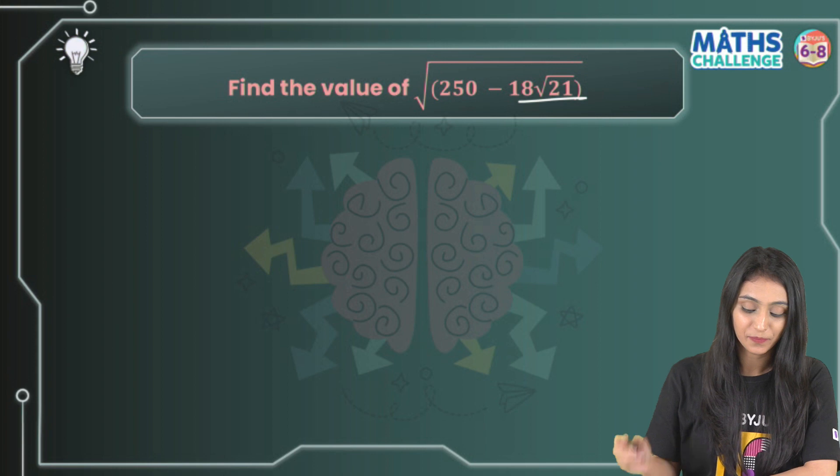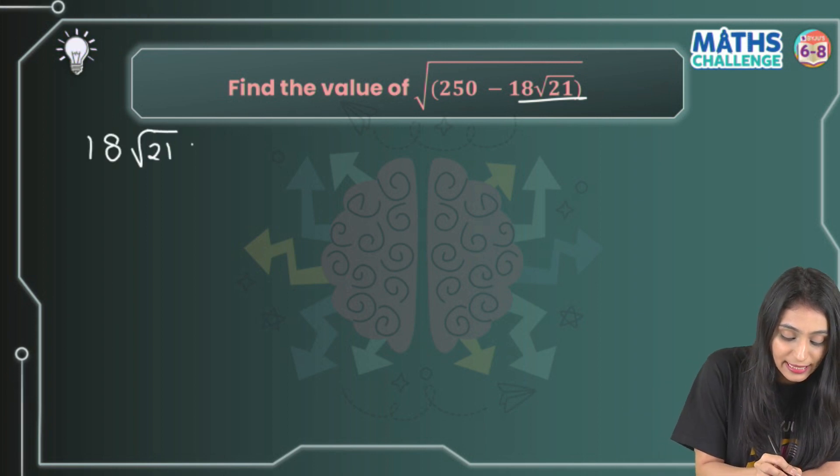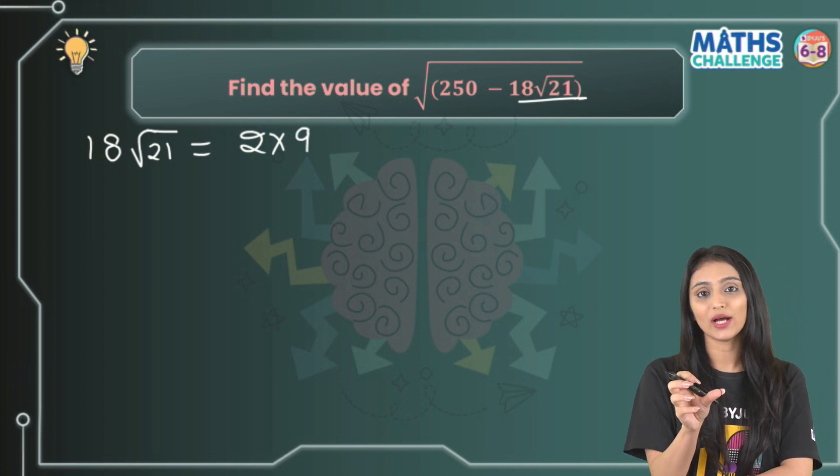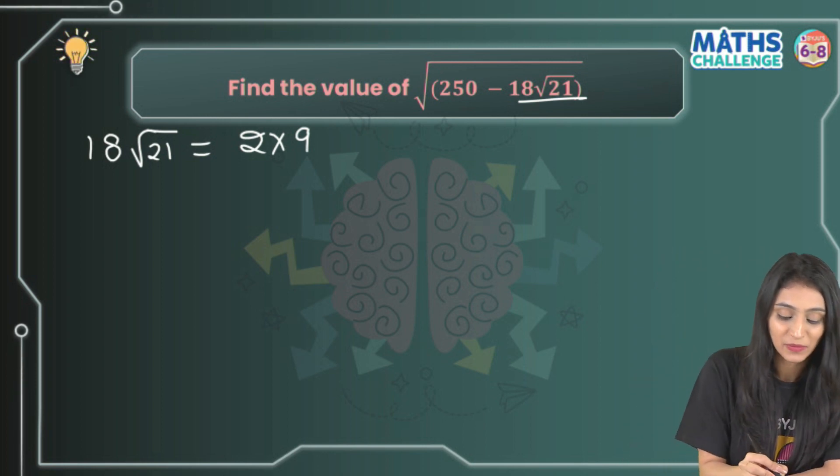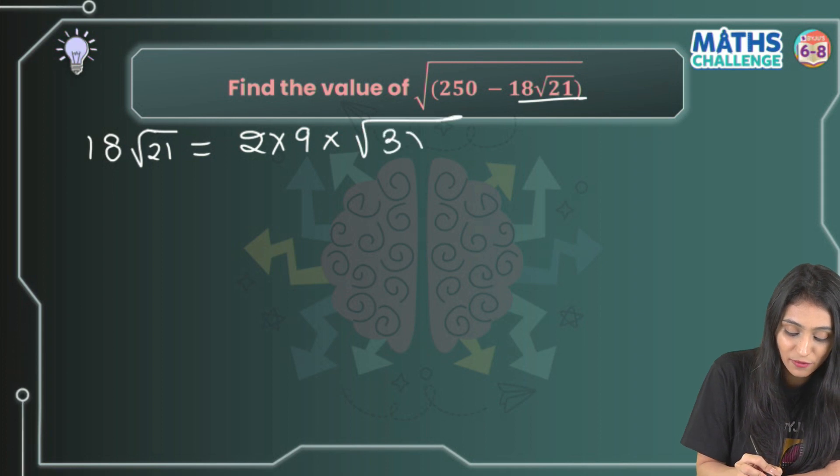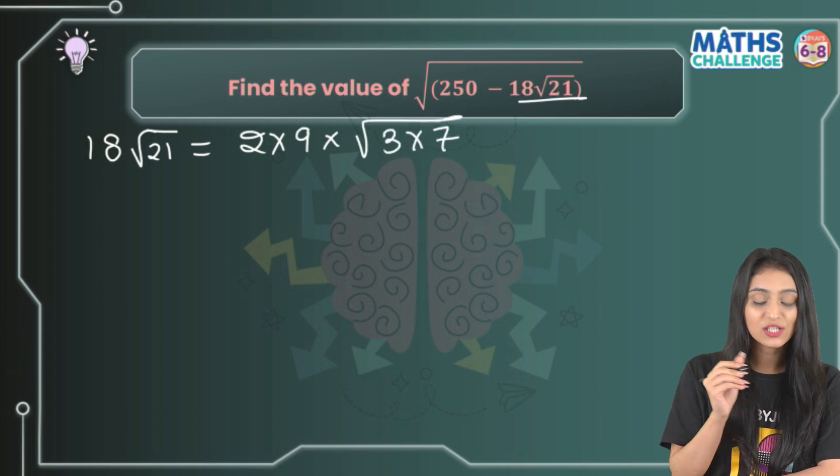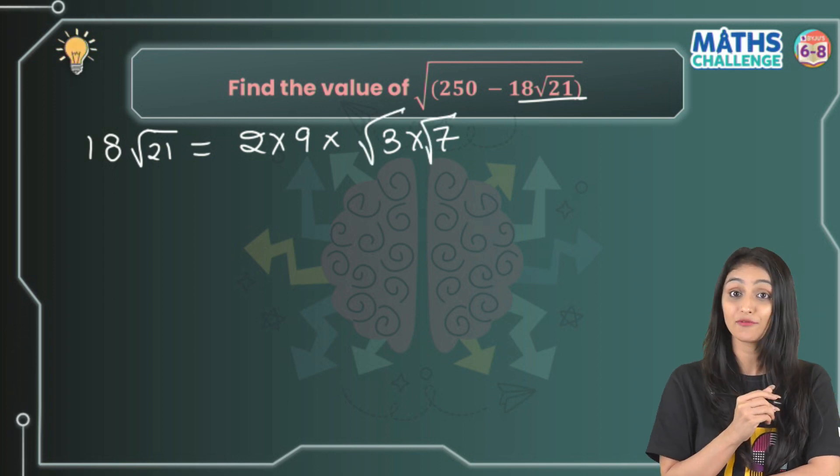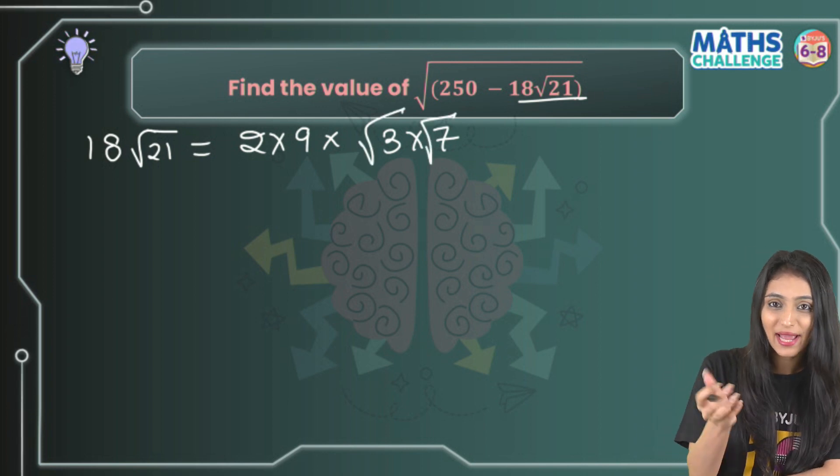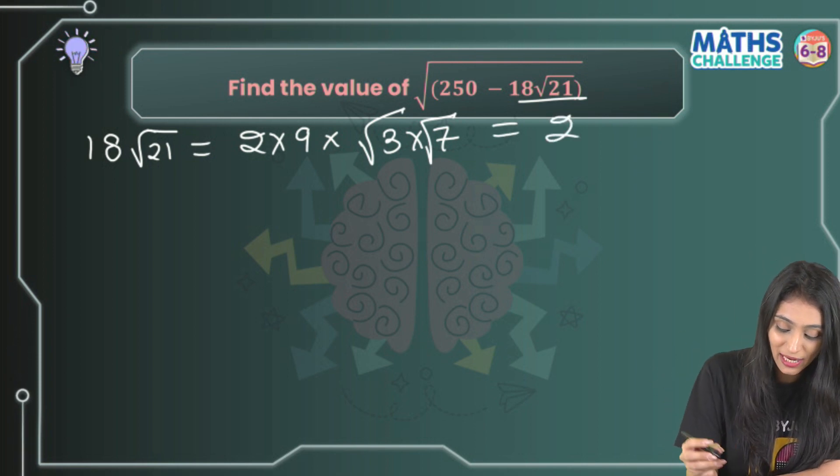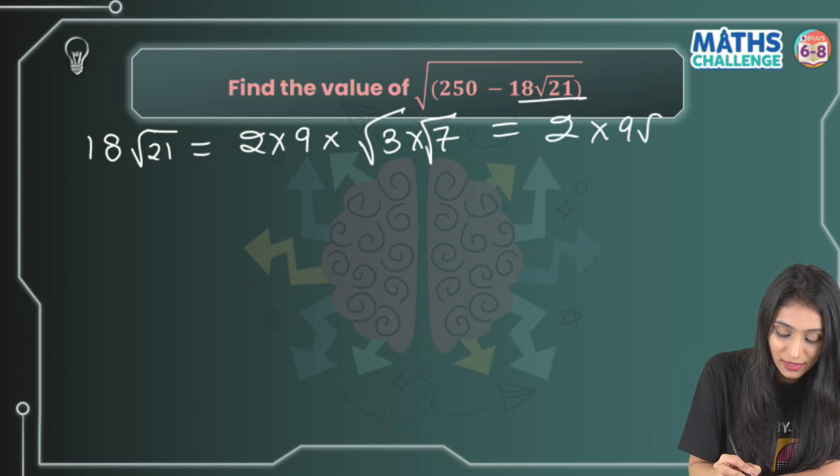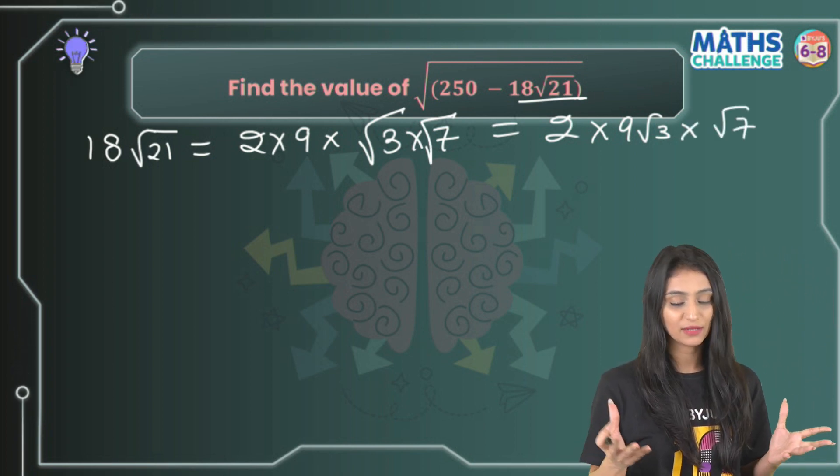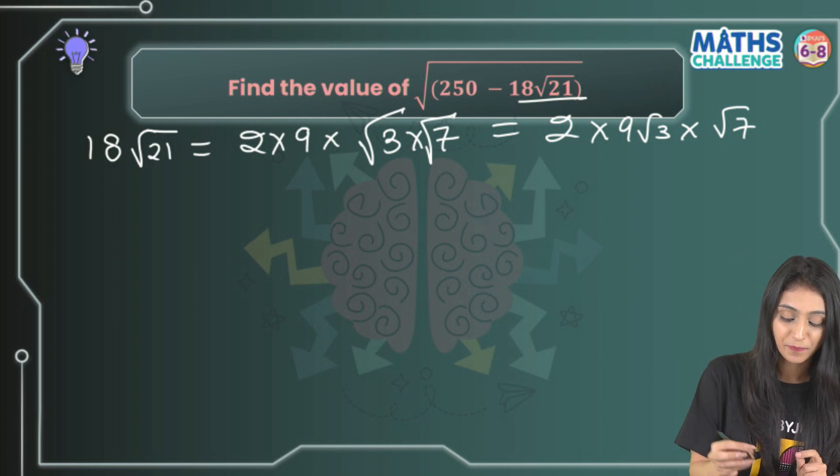18√21 - if you see this, 18 could be written as 2 times 9, right? And 21 could be factored into 3 times 7. So in the square root I've got 3 times 7. The root is common for both of them, so I can shuffle them and write it this way: 2 × 9√3 × √7. It's still correct even if I write it this way, it doesn't matter.